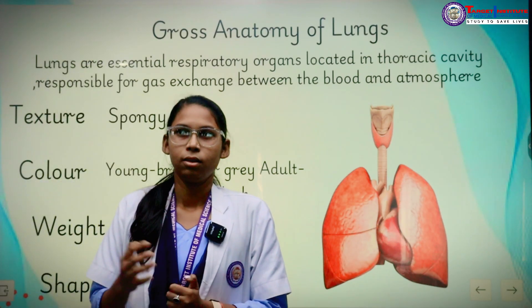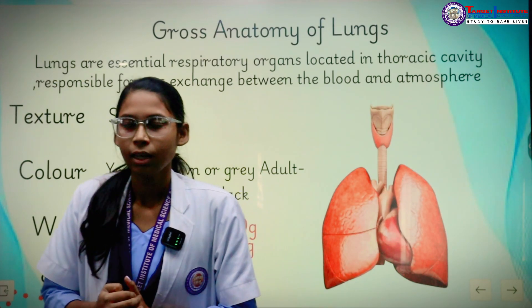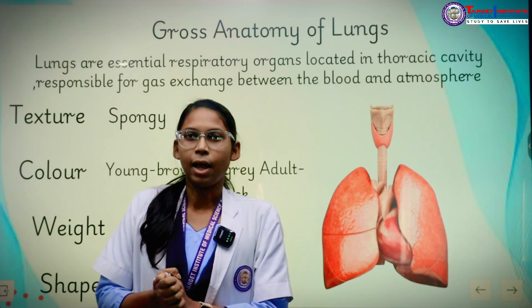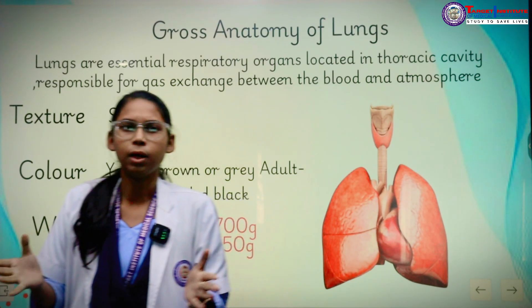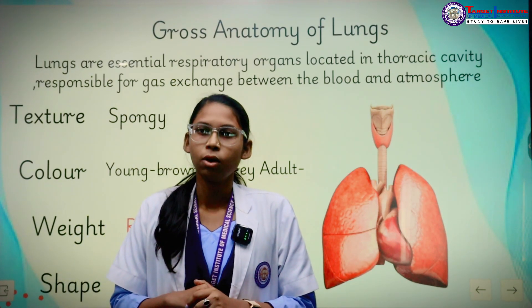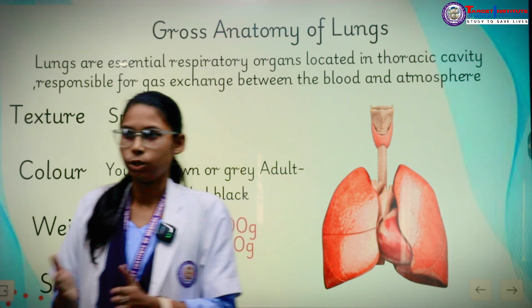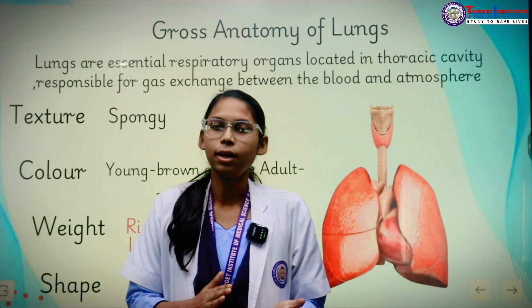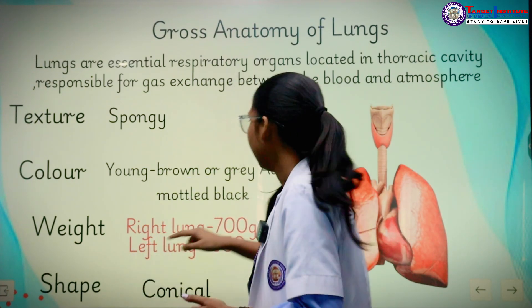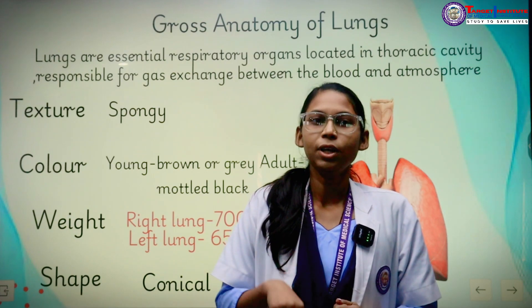The color of the lungs in young age is brown and gray, but gradually with time it converts to mottled black. There is a misconception among people that only a person who smokes or suffers from disease or infection has a color change in the lungs. But even a healthy person's lungs also change color in adulthood, converting to mottled black due to the deposition of carbon particles that we inhale.